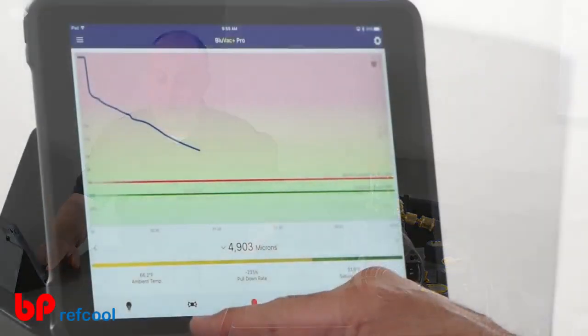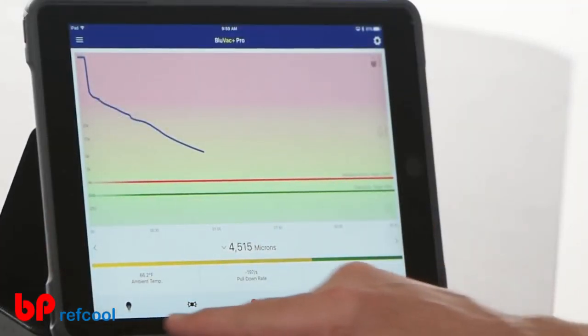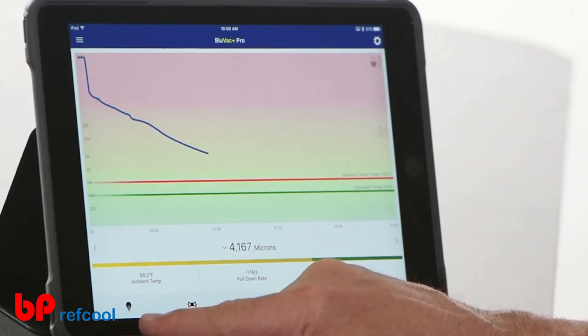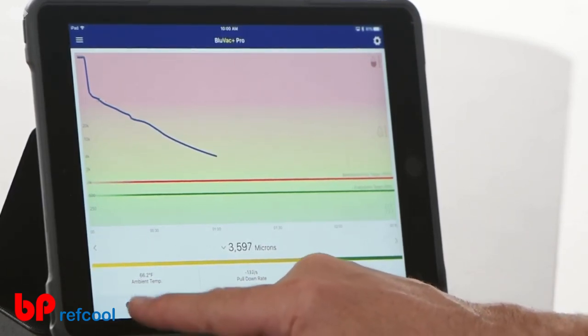So we're going to let this run for just a few minutes. I'm going to show you a couple other interesting things on the gauge here. Number one is some of the icons here. This is a backlight so we can control the backlight of the vacuum gauge. We can turn that off or on.